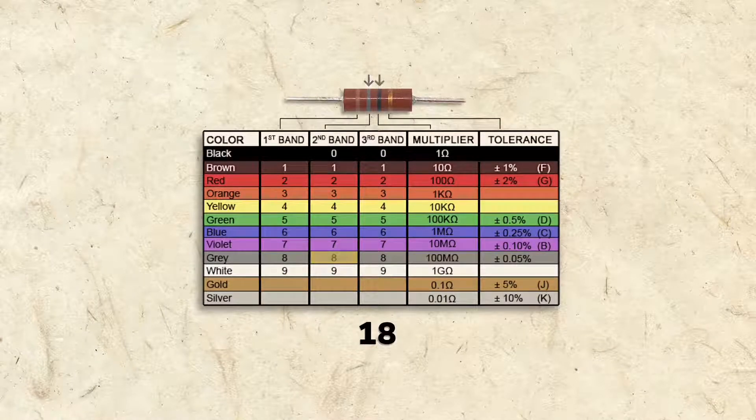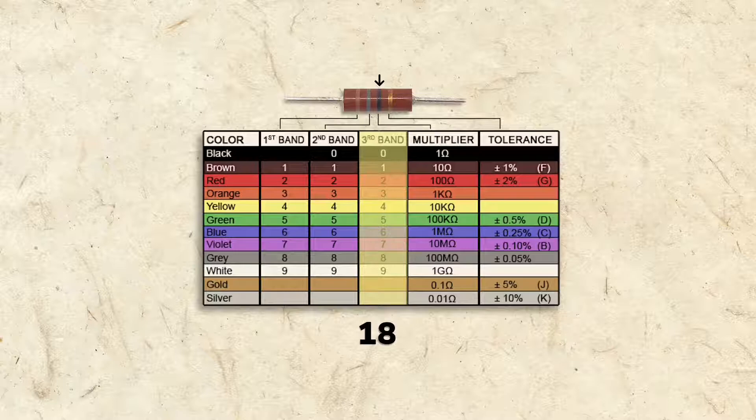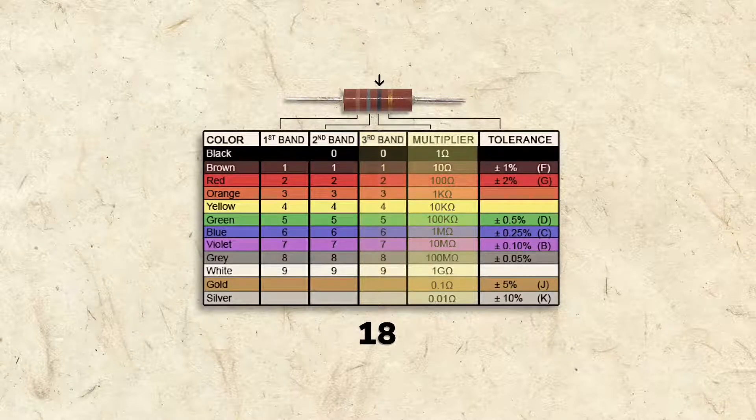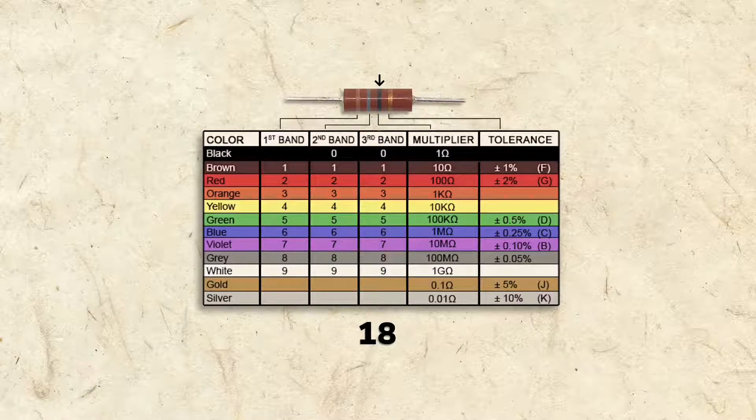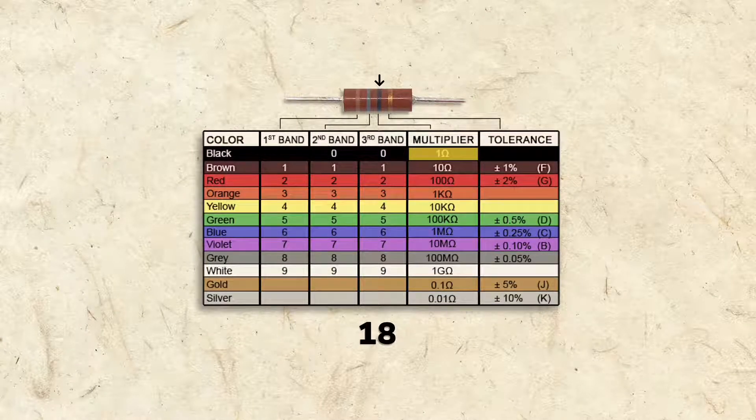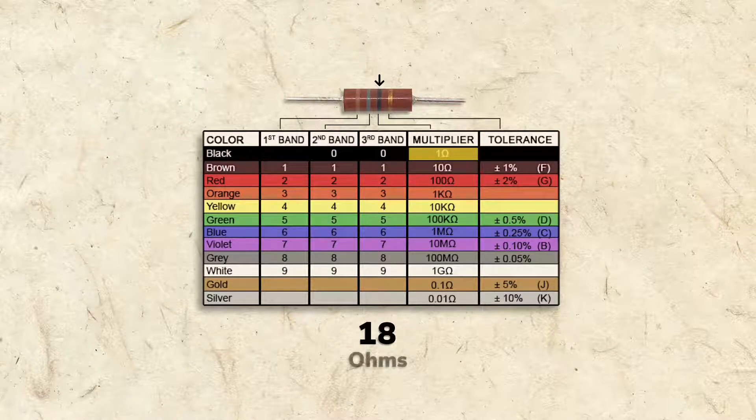Notice that the third band doesn't point to the third column, but instead to the multiplier column. That's because when resistors have only four bands instead of five, the third is always the multiplier. Our multiplier band is black, which represents times 1 ohm, validating that this is an 18 ohm resistor.